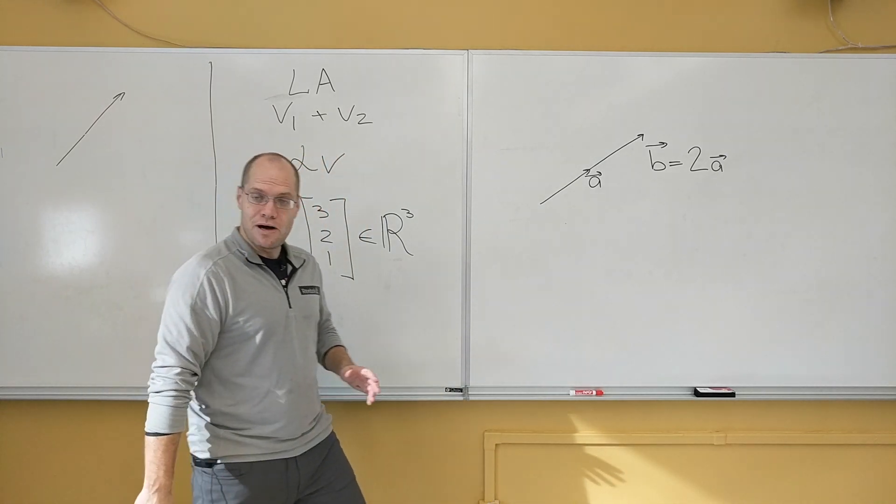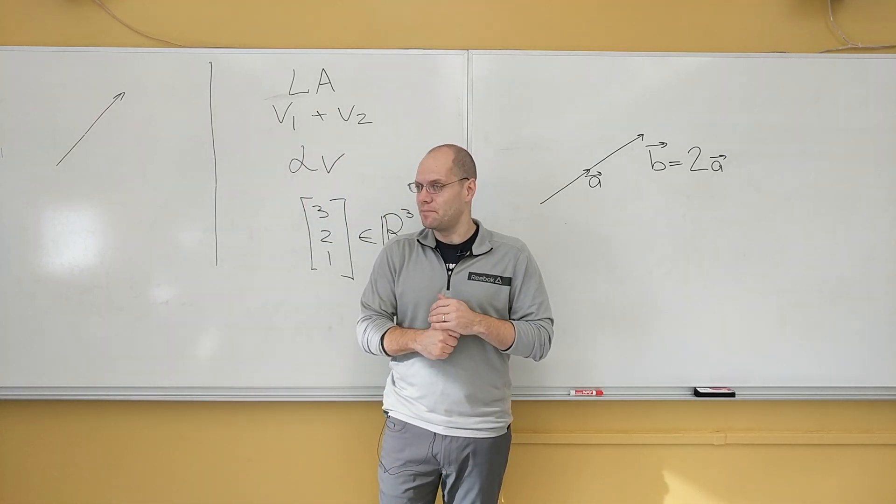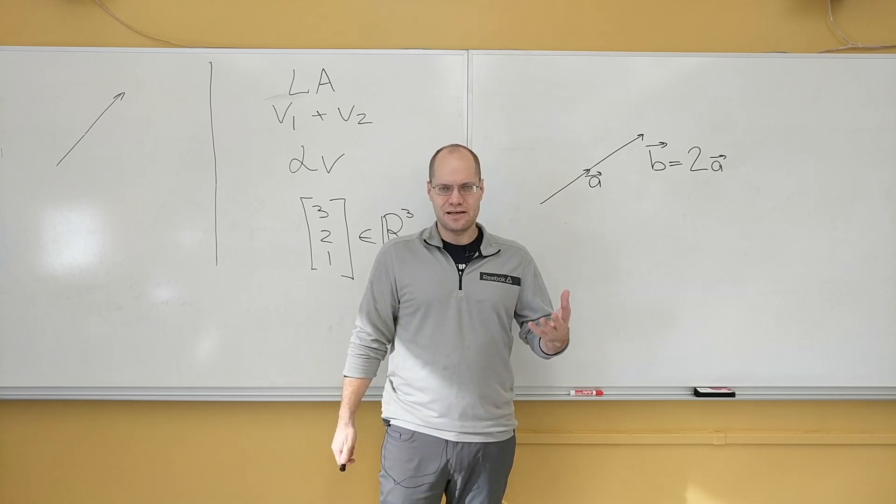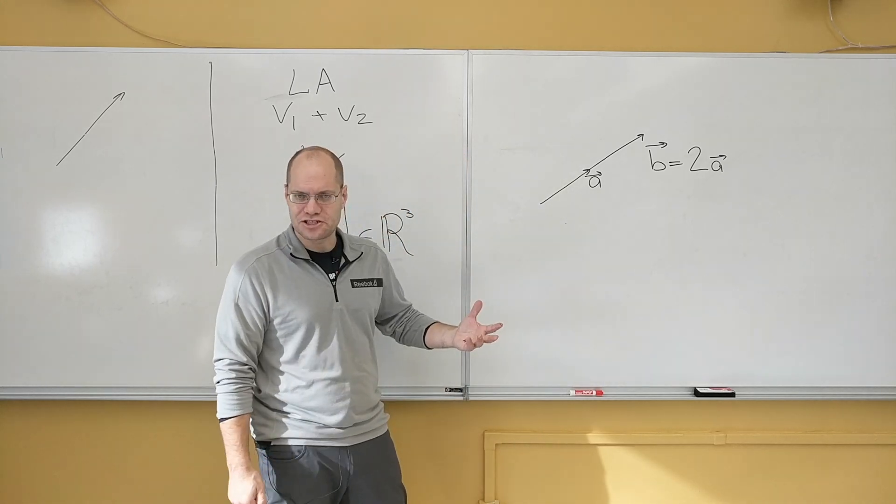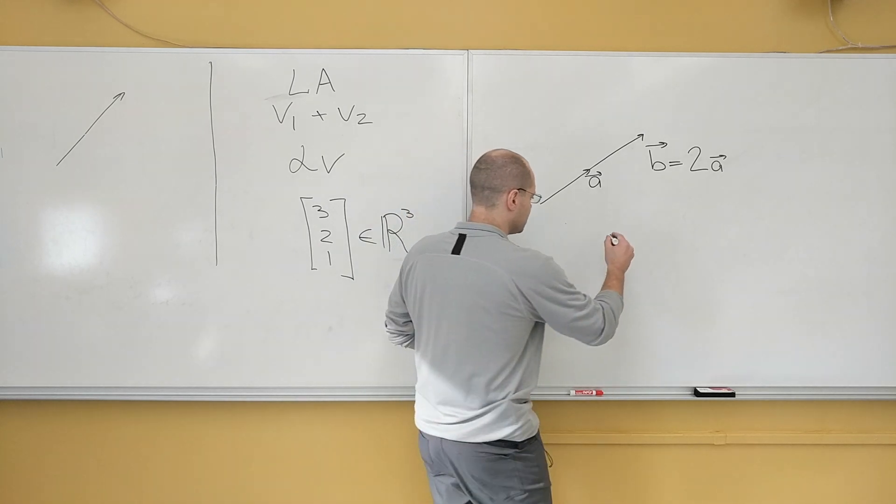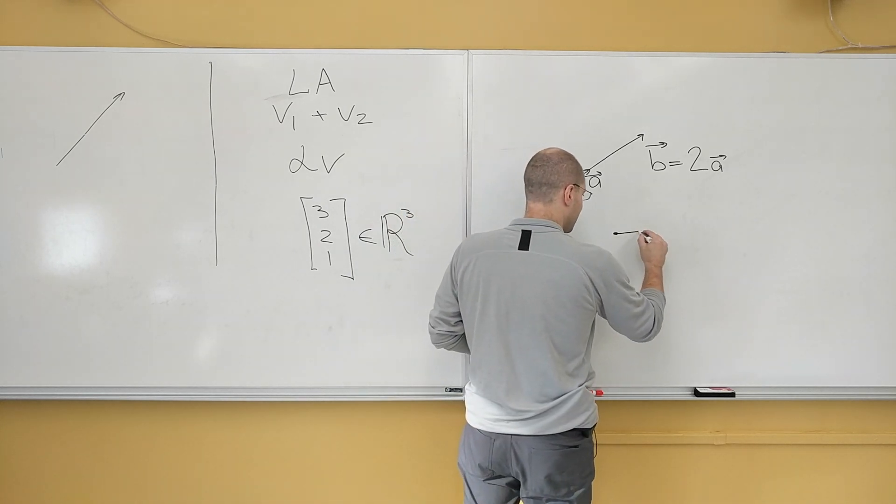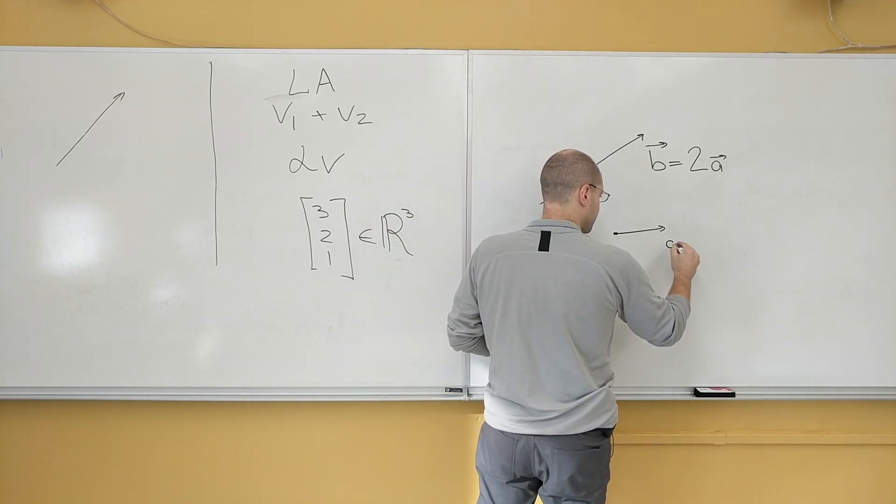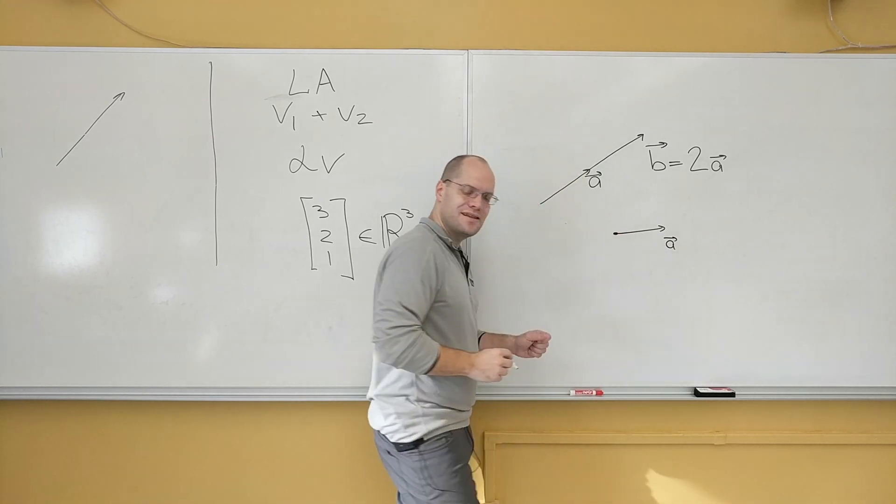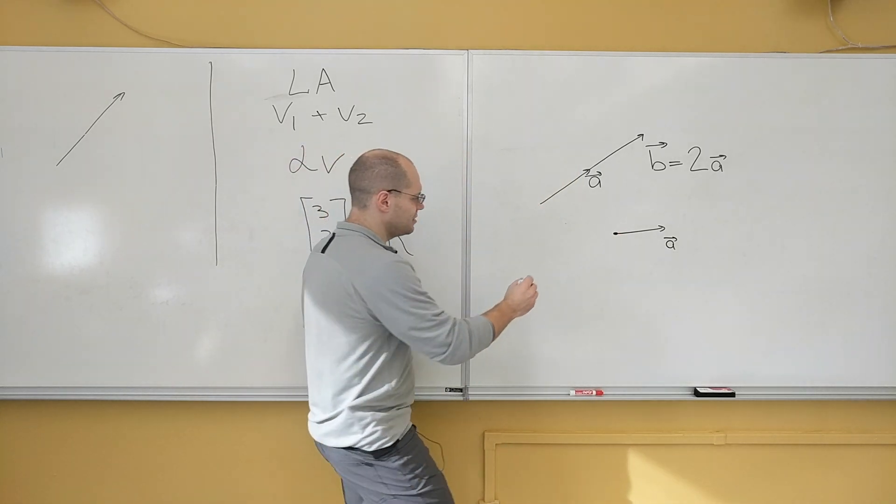I can also multiply a vector by a negative number. Once again, by convention, not by convention, by definition, you have to reverse its direction. So if this is a, then minus 2a looks like this.